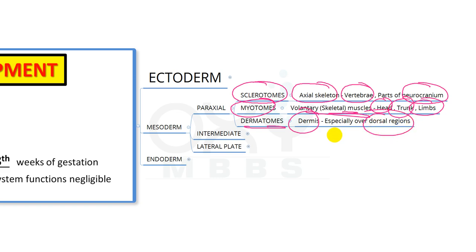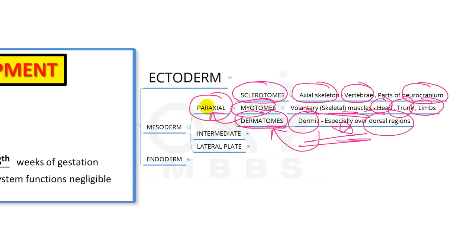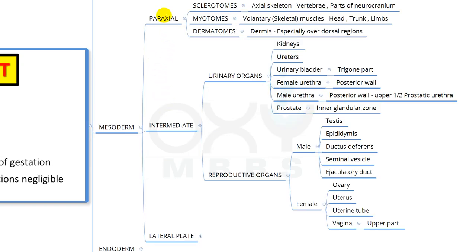From the dermatomes, the dermis of the dorsal region is derived. These dermatomes are part of the para-axial mesoderm, which is itself a part of the mesoderm germ layer.